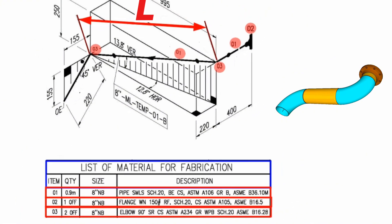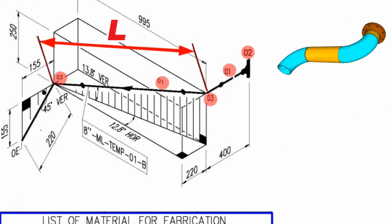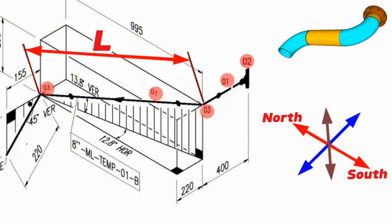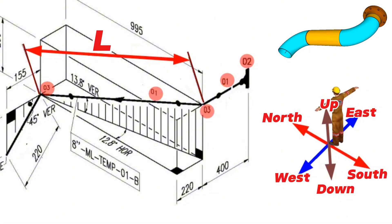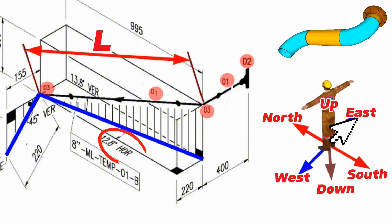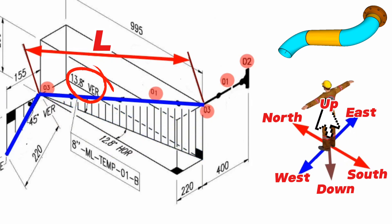We have successfully completed learning the bill of materials in this pipe drawing. Now let's find out in which directions this pipeline is heading. You can see a direction diagram in each pipe drawing showing 6 directions: North, South, East, West, Up, and Down. The person reading the drawing should imagine himself facing north from the center. The pipeline starts from a point, extends upward eastward, then turns southward, then rotates to the east horizontally at 12.8 degrees, then rotates upward vertically at 13.8 degrees, and finally turns eastward at a 90-degree elbow.